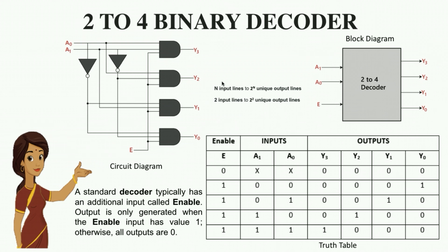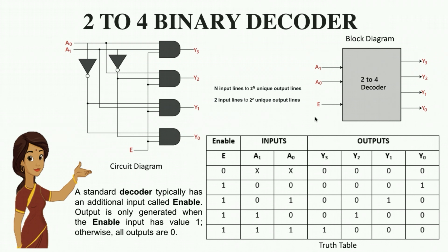For a 2-to-4 binary decoder, there are 2 input lines which are converted to 2^2 which is 4 output lines. A decoder usually comes with an enable input, so the output is generated only when the enable value is 1; otherwise all outputs are 0. This is the circuit diagram and truth table of a 2-to-4 binary decoder.